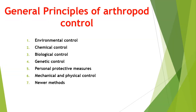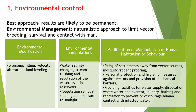Before going into details of the mosquito, we will see some general principles of arthropod control, which we can apply to control the majority of arthropods. These are: environmental control, chemical control, biological control, genetic control, use of personal protective measures, mechanical and physical control, and some newer methods. Environmental control is the best approach, as the results are likely to be permanent. The main focus is to limit vector breeding, survival, and contact with man. Environmental manipulations include elimination of breeding places, reduction of source, filling and drainage operations, provision of piped water supply, proper disposal of refuse and waste, and maintaining cleanliness in and around houses.